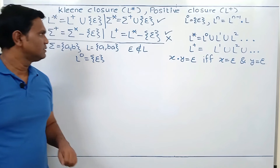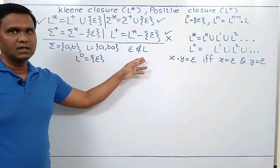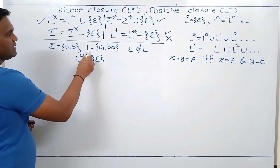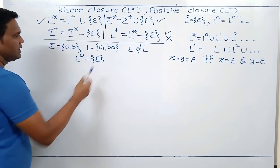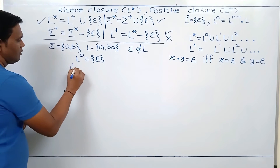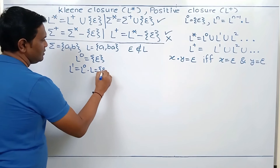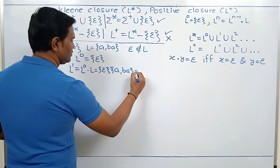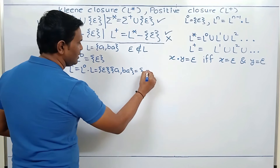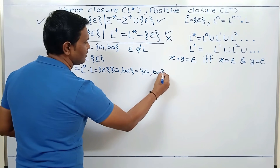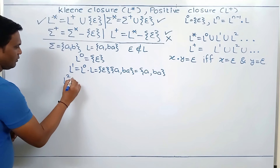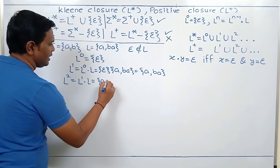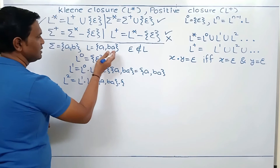Now consider the next possibility: a language where epsilon is not part of the language — epsilon does not belong to L. Consider a language that contains A and BA. L^0 contains only epsilon. L^1 is equal to L^0 dot L; it is epsilon dot {A, BA}, so we get {A, BA}. If we calculate L^2, it will be L^1 dot L, so {A, BA} dot {A, BA}, giving us {AA, ABA, BAA, BABA}.